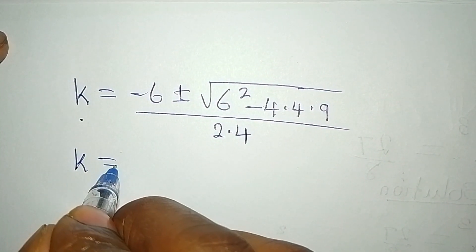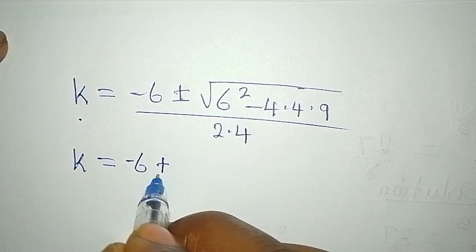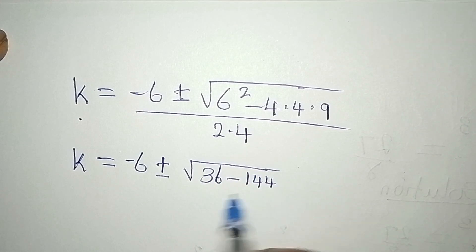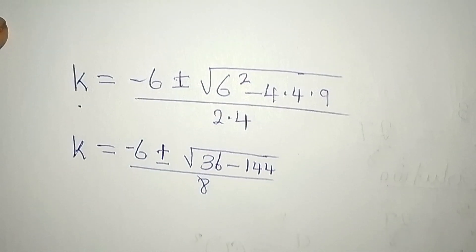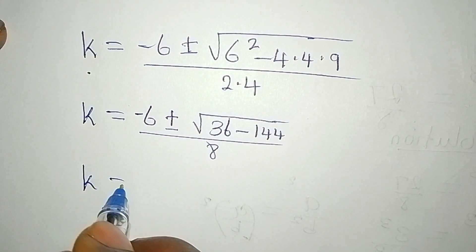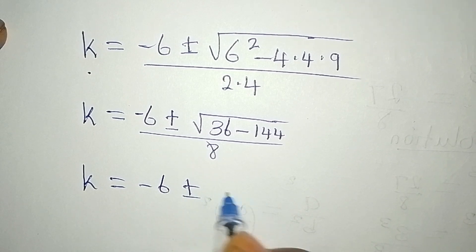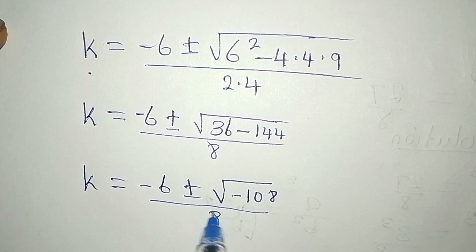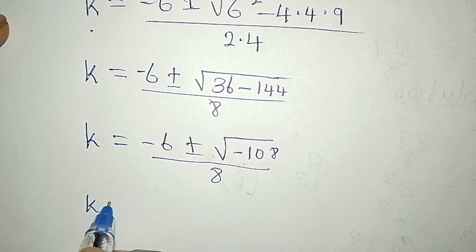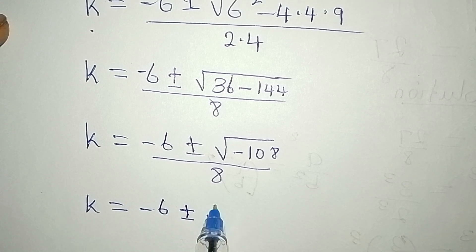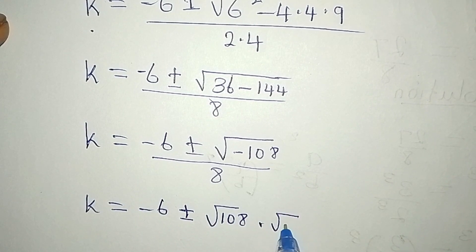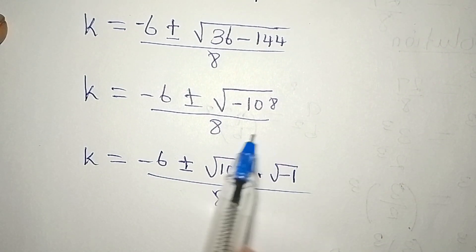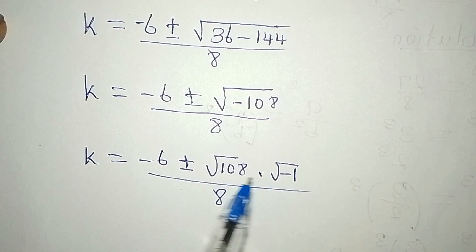k equals (−6 ± √(36 − 144)) / 8, so that is (−6 ± √(−108)) / 8. We can separate the negative: k equals (−6 ± √108 · √(−1)) / 8.